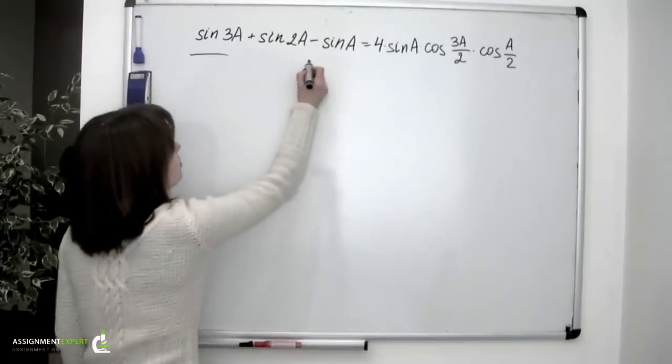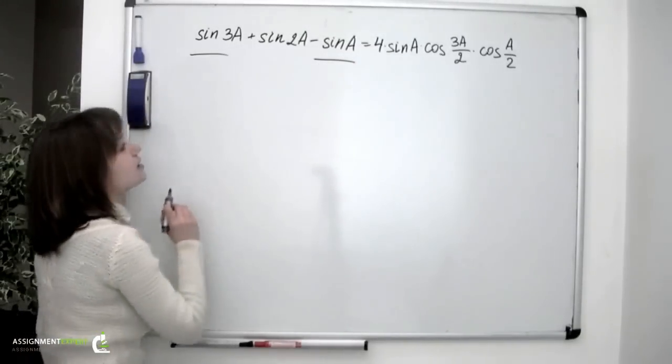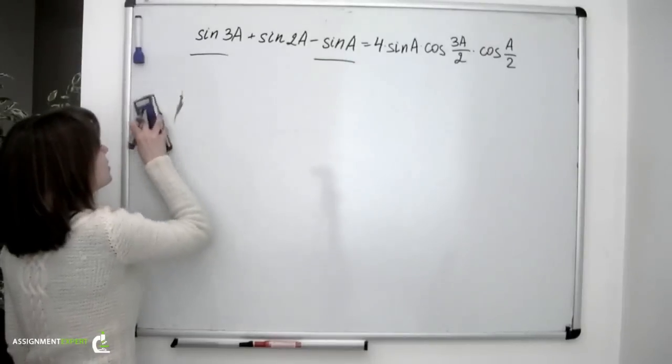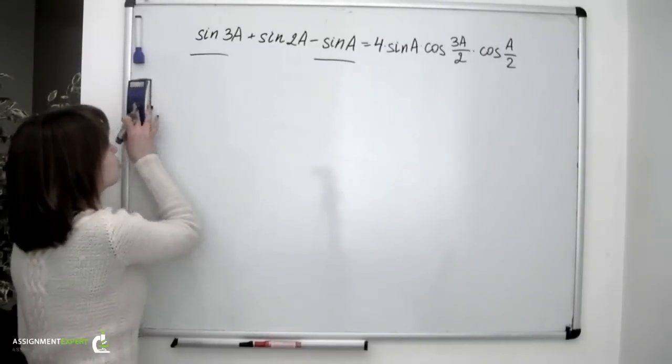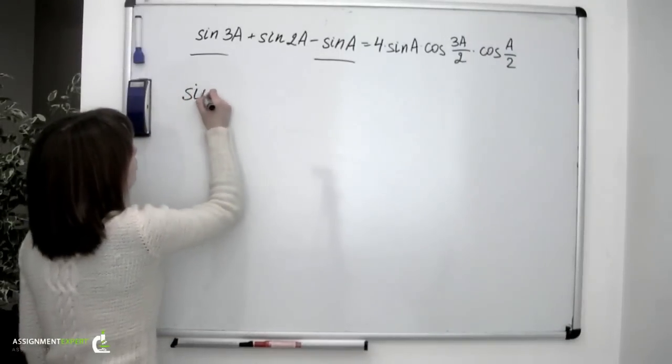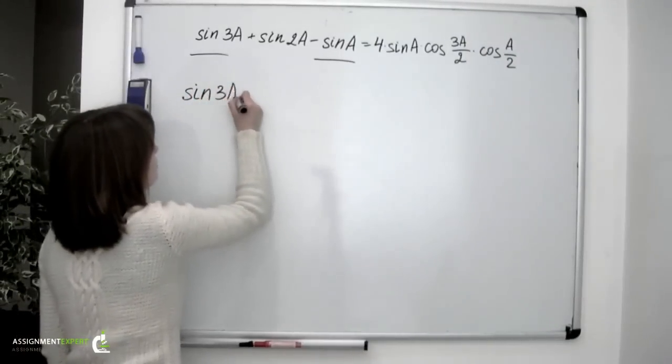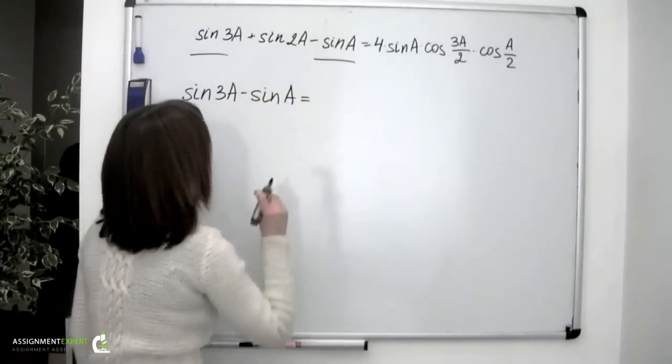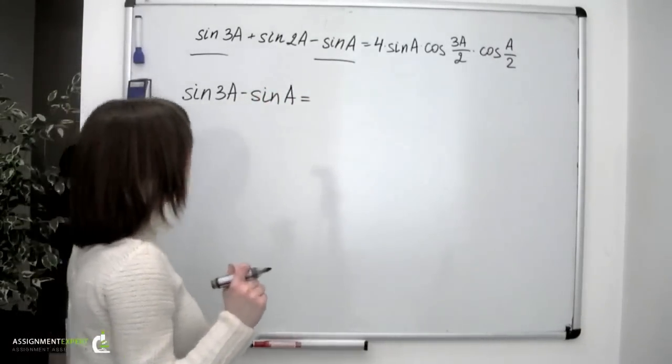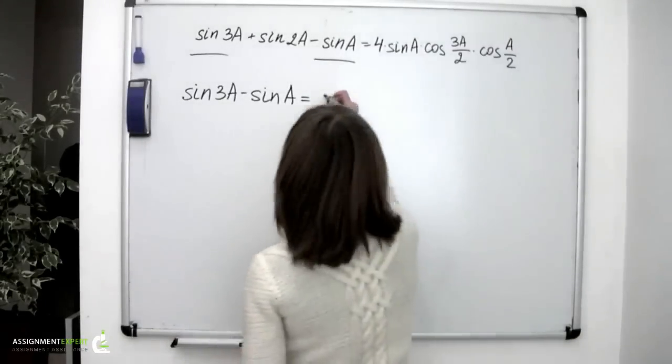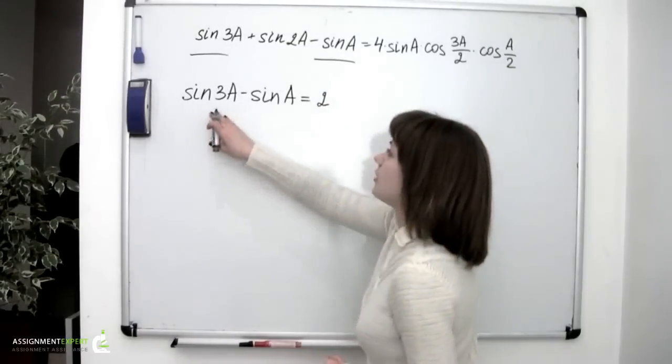Let's take a look at these two summands, sin 3a and negative sin a. Keeping in mind the known trig identities, we can recall one of them and transform this difference into the following product. So we have sin 3a minus